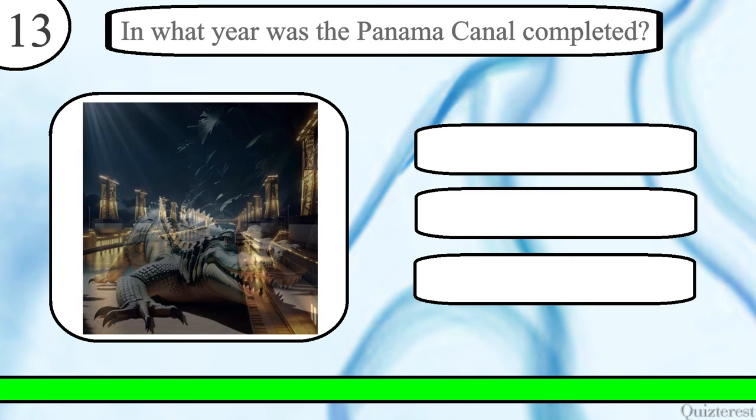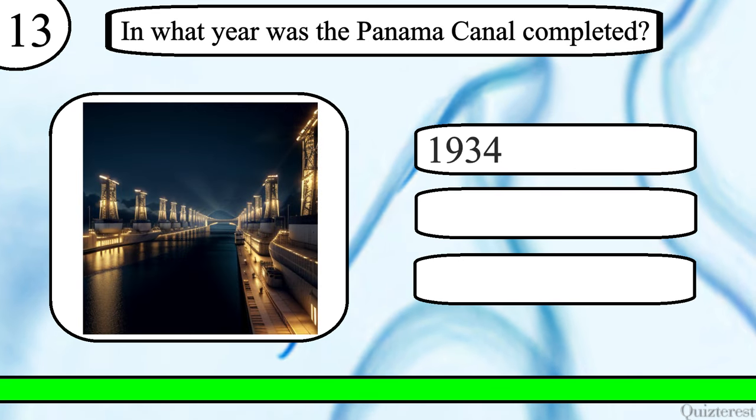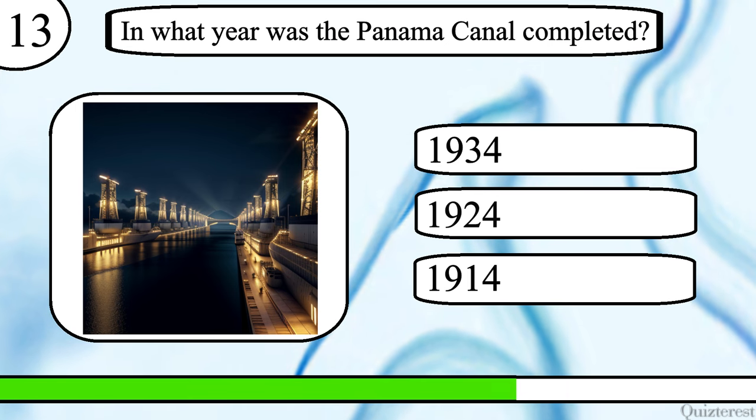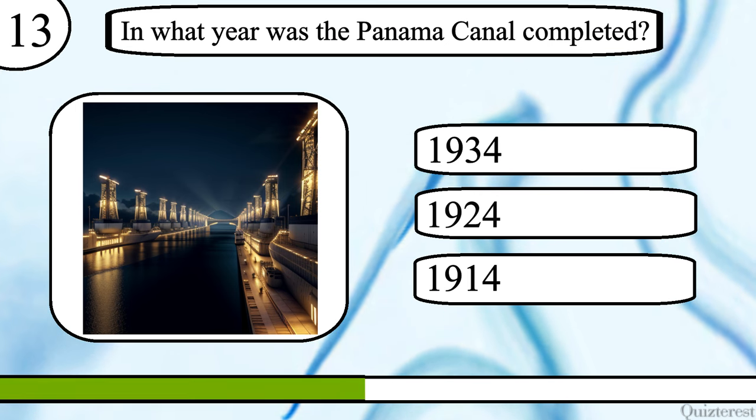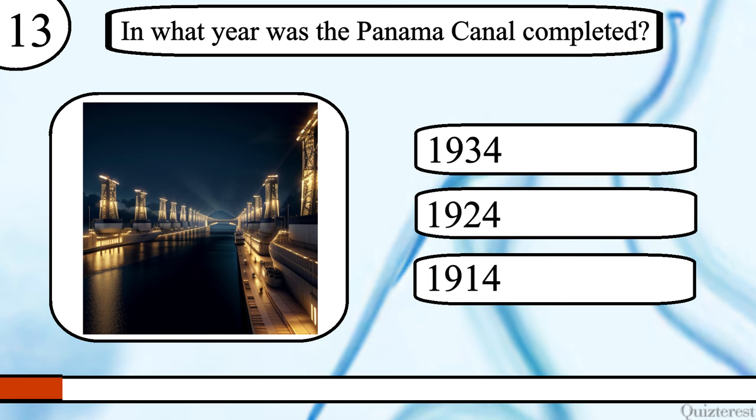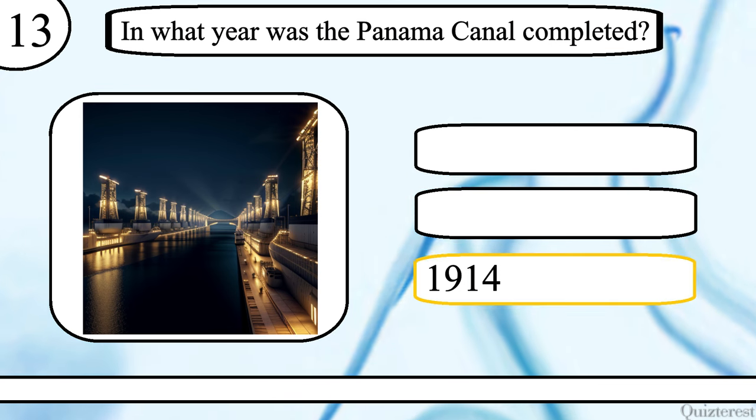Question 12. In what year was the Panama Canal completed? 1934, 1924 or 1914? The correct answer is 1914.